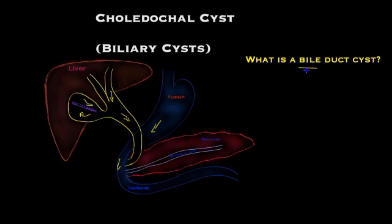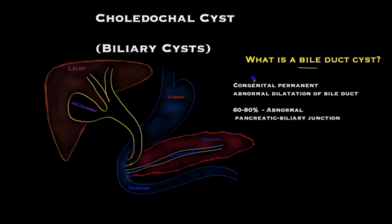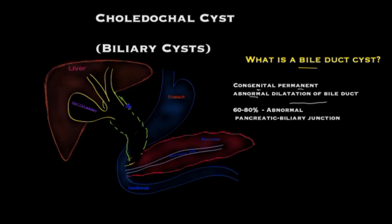Now let's look at what is a bile duct cyst. A choledochal cyst is a congenital — that is, from birth — permanent abnormal dilatation of part of the bile duct. The commonest variety is one where the bile duct enlarges and is dilated in the fashion of a sac all the way down, so that it finally ends up looking like a sac rather than a smooth thin tube. That is a bile duct cyst, or a variant of it.